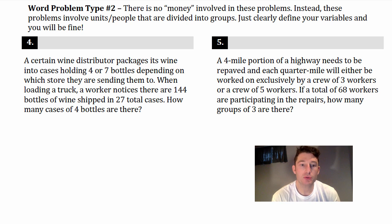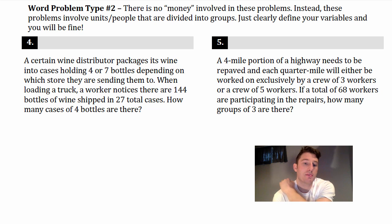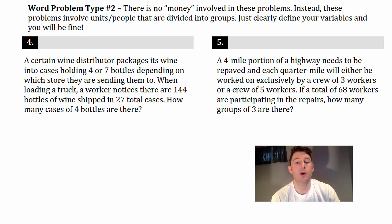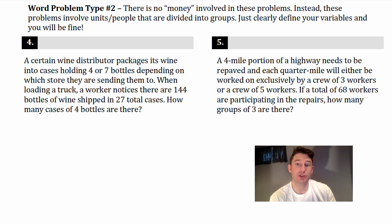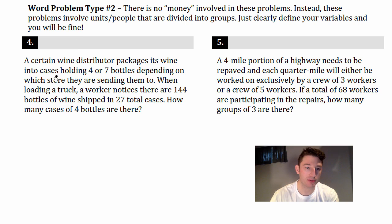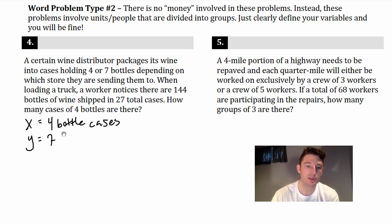A certain wine distributor packages its wine into cases holding four or seven bottles, depending on which store they're sending them to. When loading a truck, a worker notices there are 144 bottles of wine shipped in 27 total cases. How many cases of four bottles are there? First thing: identify your variables. Let X equal the four-bottle cases and Y equal the seven-bottle cases.